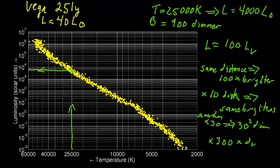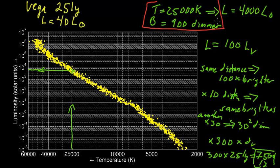300 times 25 light years is 7,500 light years. So this star, from really just temperature measurements and brightness, we're able to get the distance at 7,500 light years.